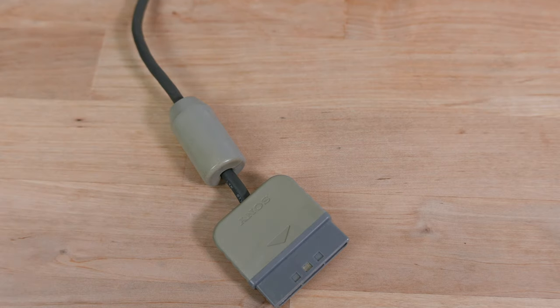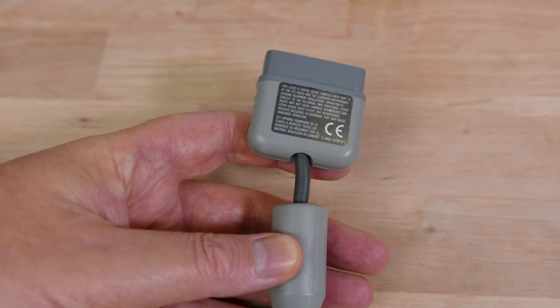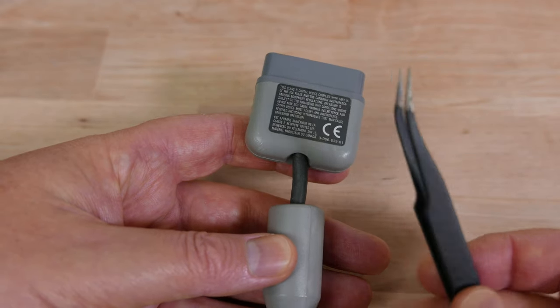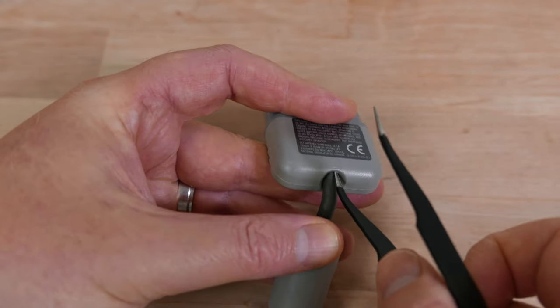First, hold the connector so that the back with the label on it is facing you. Then take some curved tweezers and insert one leg of the tweezers into the hole where the cable goes in.